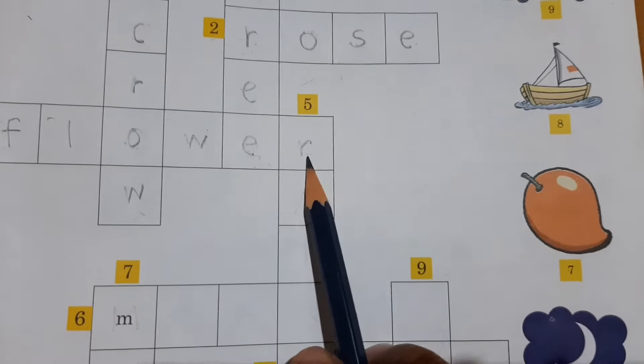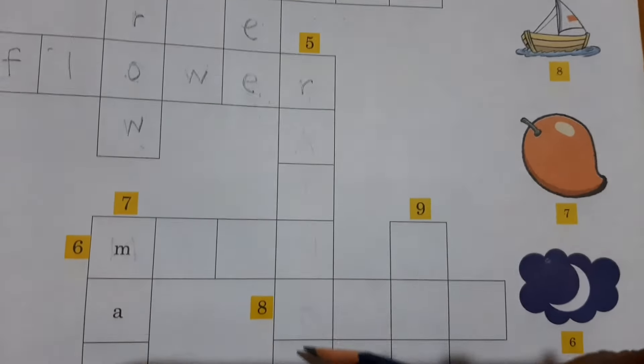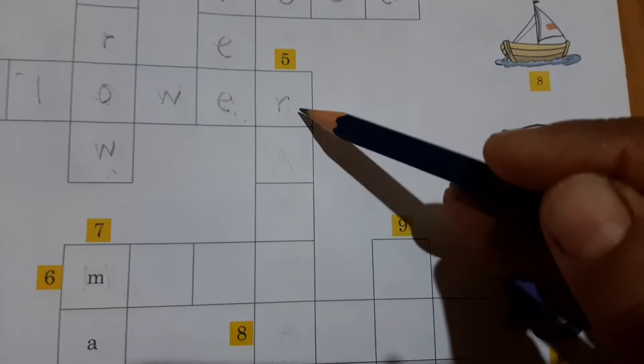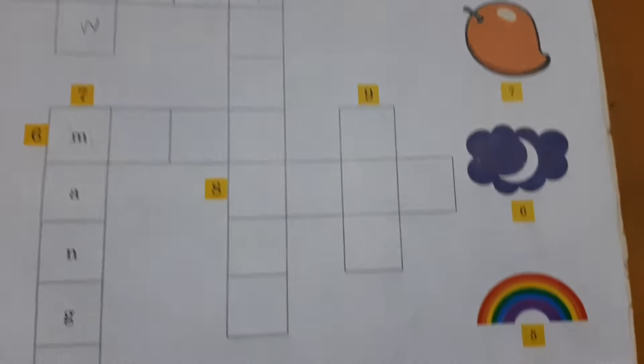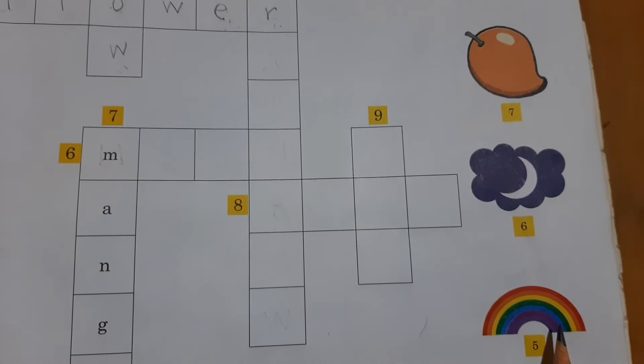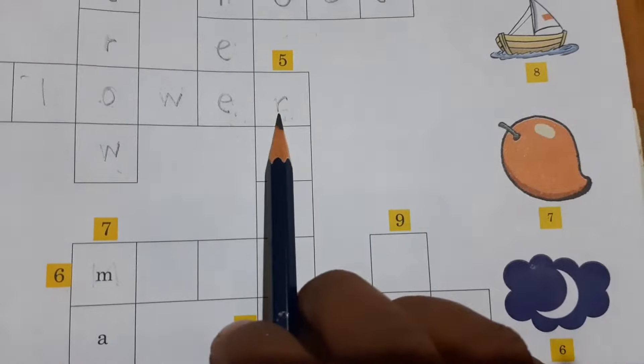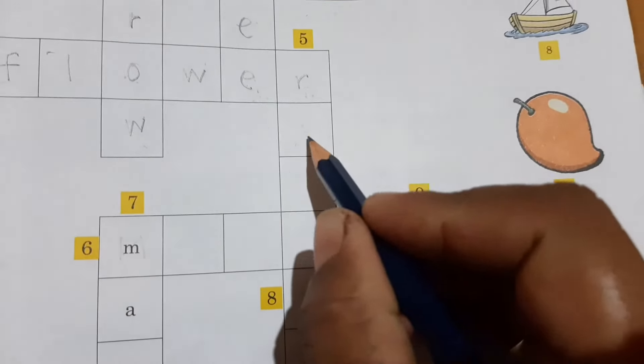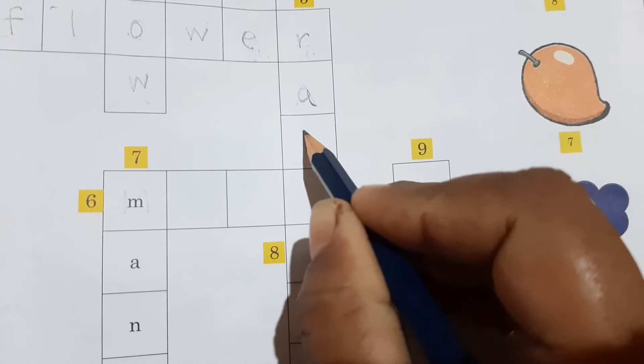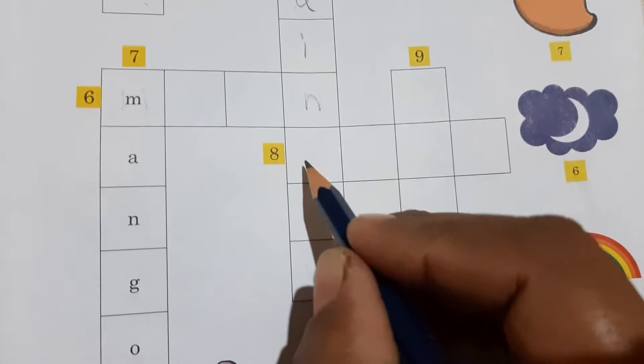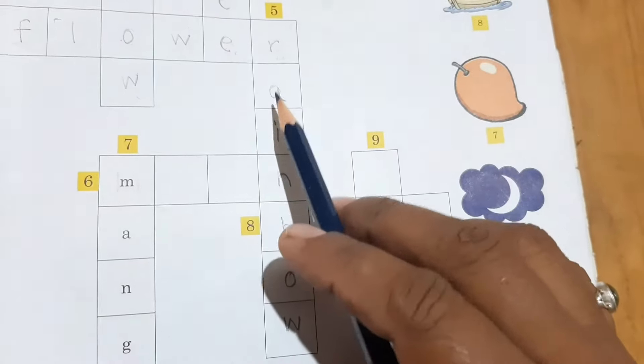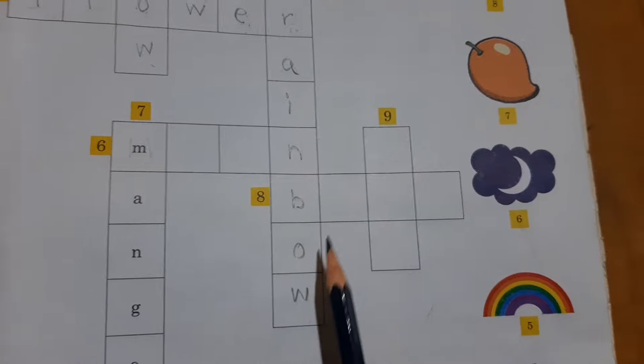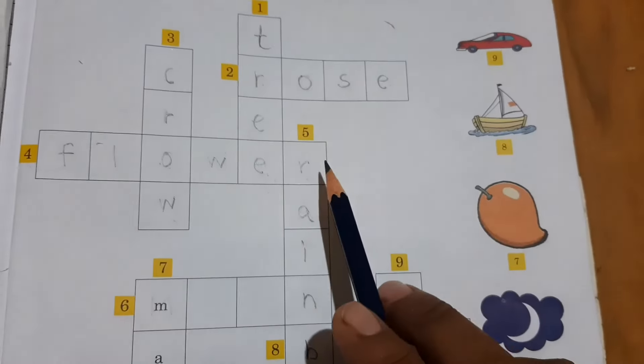Now come to number 5. Here, what we write for number 5, whichever spelling we write, it will start with letter R. Let's see which picture is there on number 5. It's a rainbow. Rainbow spelling is started with letter R. R-A-I-N-B-O-W. Here, rainbow: R-A-I-N-B-O-W. Which number did we finish? Number 5.